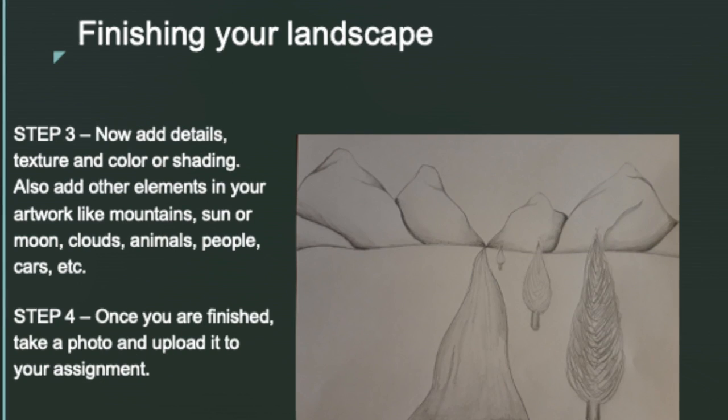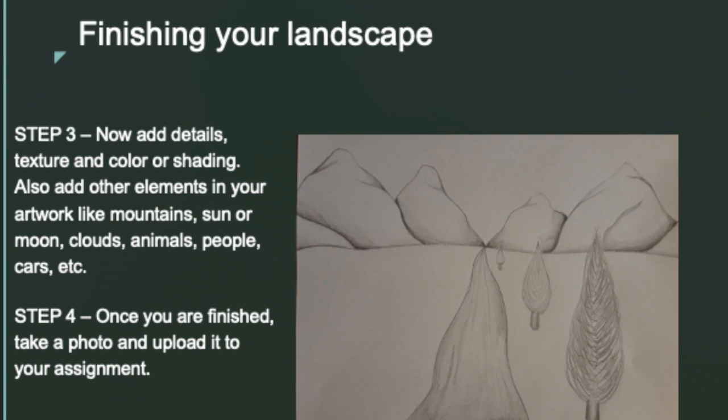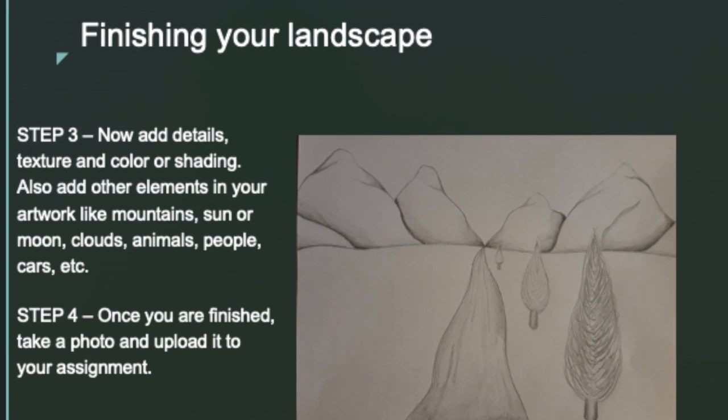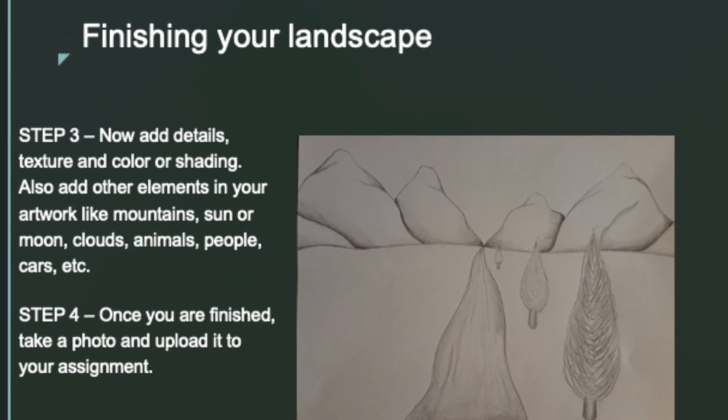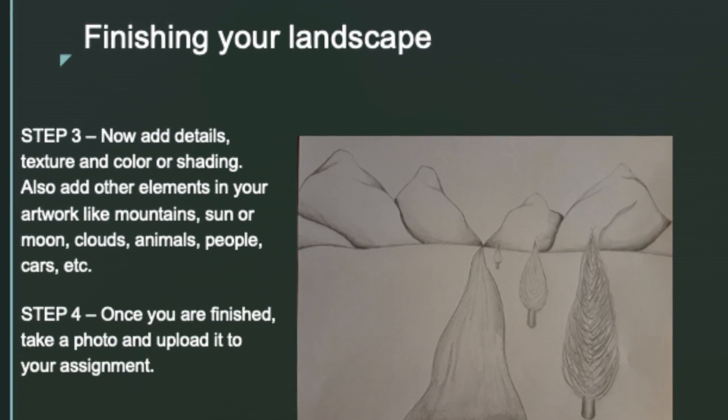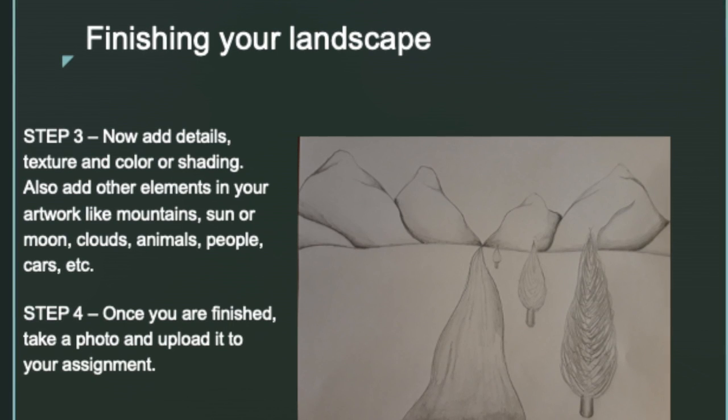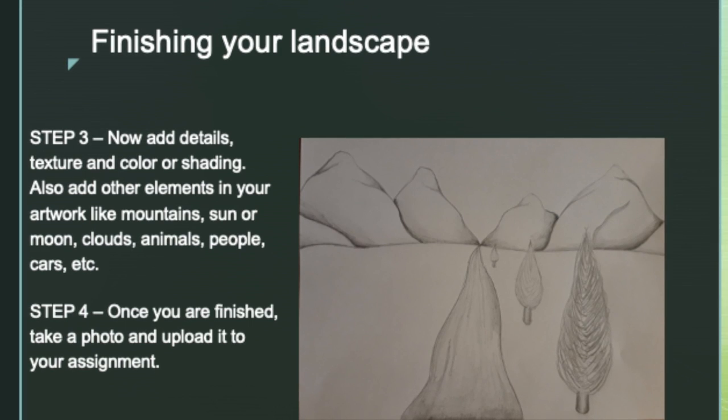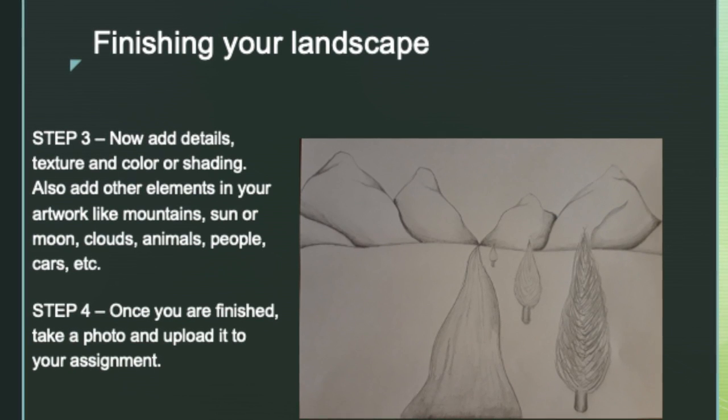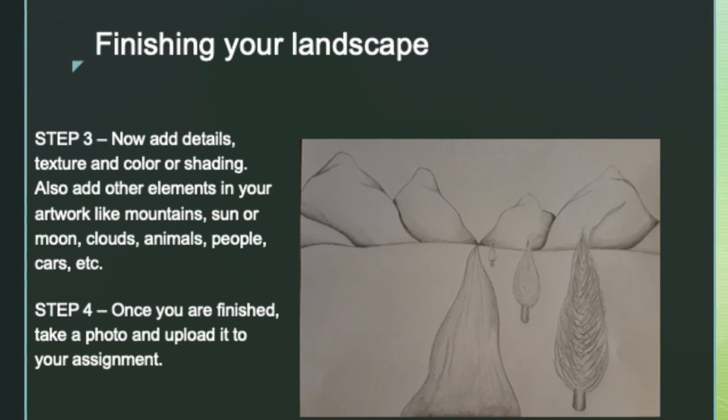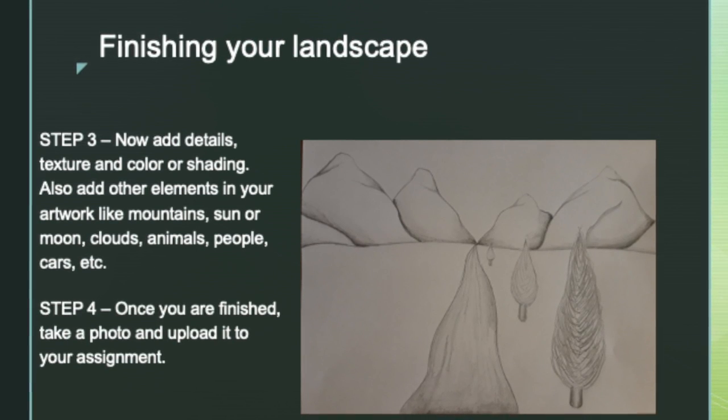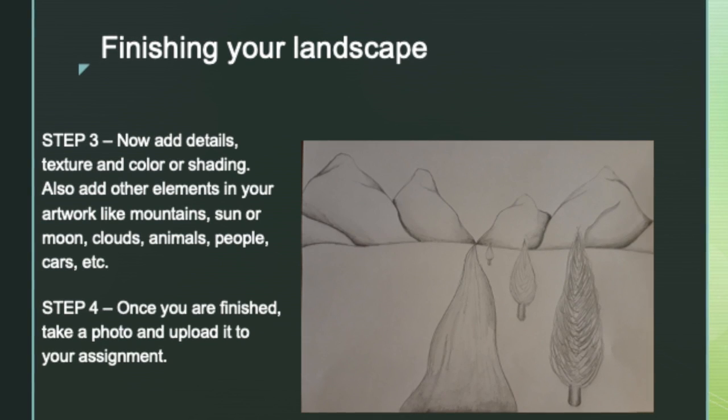To finish your one-point perspective landscape, you are going to want to add other elements to this landscape. Maybe some mountains in the background, or a sun, moon, or clouds. Maybe some buildings, cars, people, animals, or grass. You are going to add those things to make your artwork look complete.